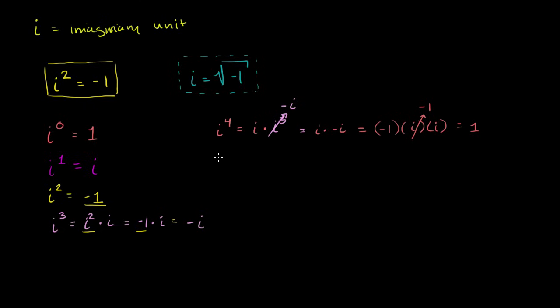Now let's try i to the fifth power. i to the fifth power. Well, that's just going to be i to the fourth times i. And we know what i to the fourth is. It is 1. So it's 1 times i, or it is just i again. And so once again, it is exactly the same thing as i to the first power.